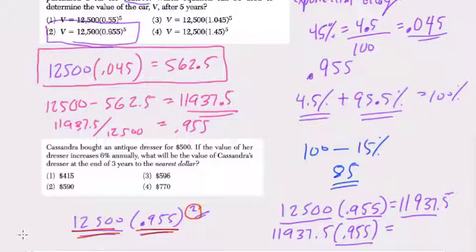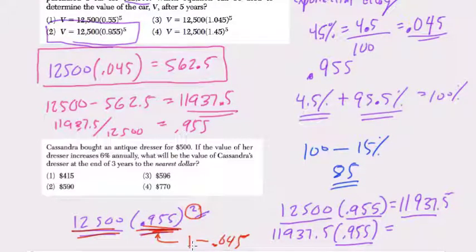And if you don't like that wording, the last thing I can offer you here is to think of this as 100% or 1 minus 0.045. So, that's exponential decay. You always get this number in here by starting with 1 and subtracting the percent that you're losing. All right. Hope that helped. Let's go to the next one.